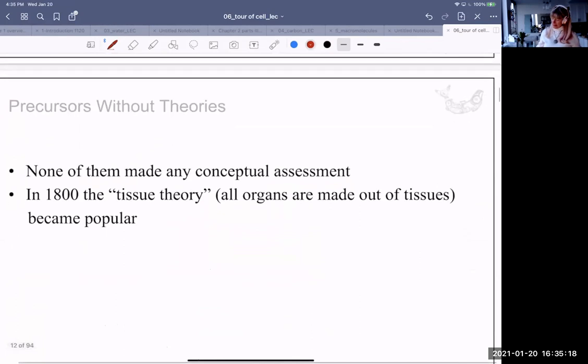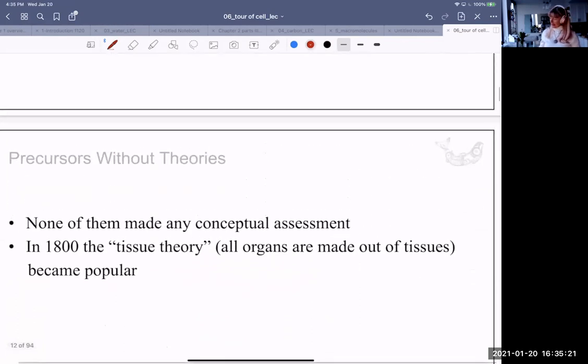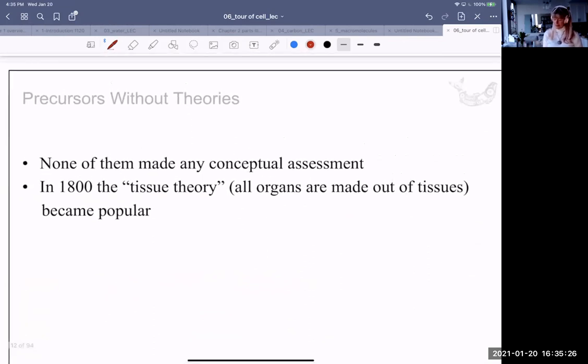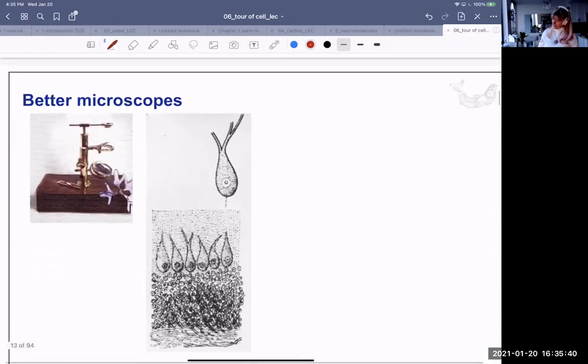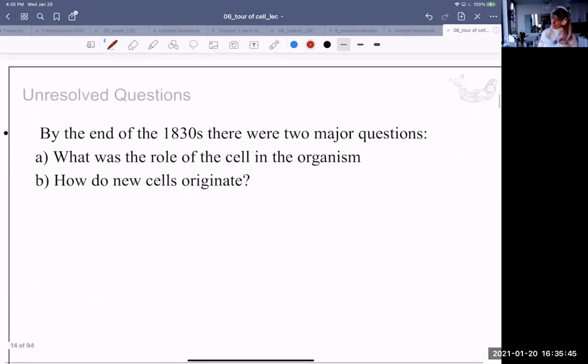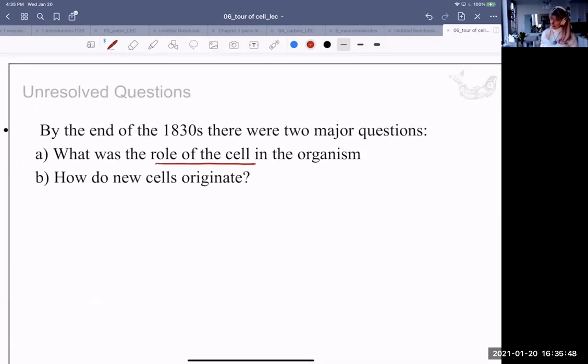Nice. Good. Nice comments, Katie. So, but with all of this data collection, there wasn't a cohesive theory of cells yet. Not a conceptual assessment. In 1800, the tissue theory that organs are made of tissues became popular. But then there was better and better microscopes after a while. But there were two major questions. What was the role of the cell? And how do new cells originate? Nobody really knew that yet. That was still very much a question.